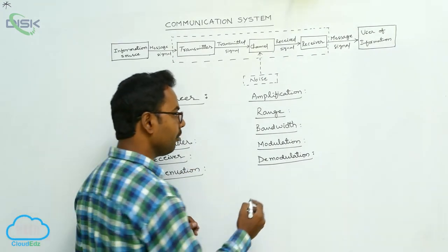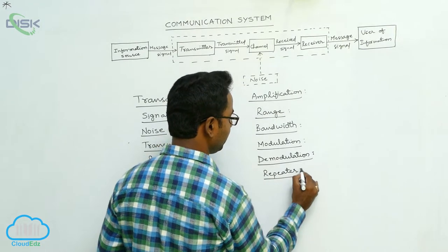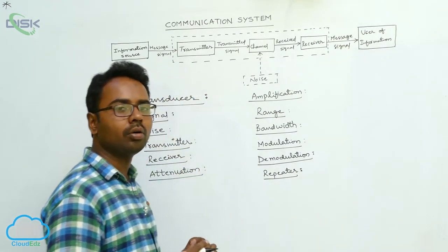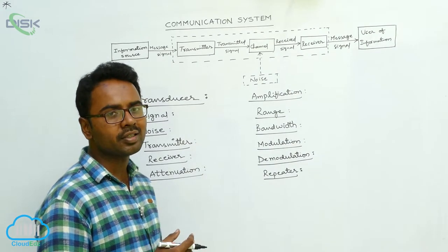Now we see what is a repeater. A repeater is the combination of transmitter and receiver. To achieve long-distance communication, we use repeaters.